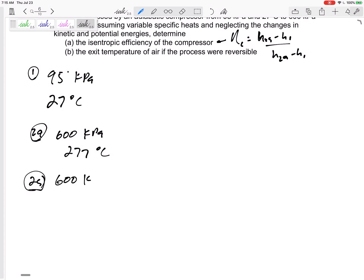2 isentropic, yes, we're going to still say it is at 600 kPa, the pressures that it operates between are the same even if it was isentropic. But this temperature though, we don't know. We don't know the temperature.